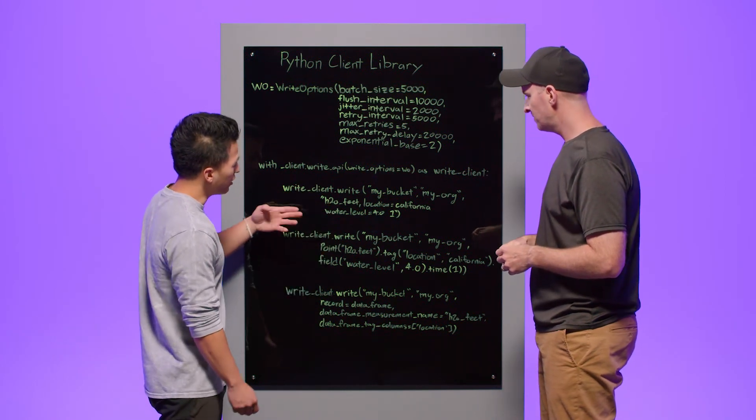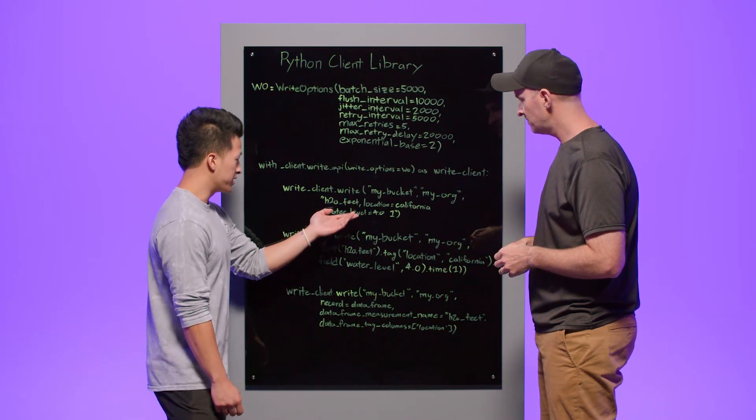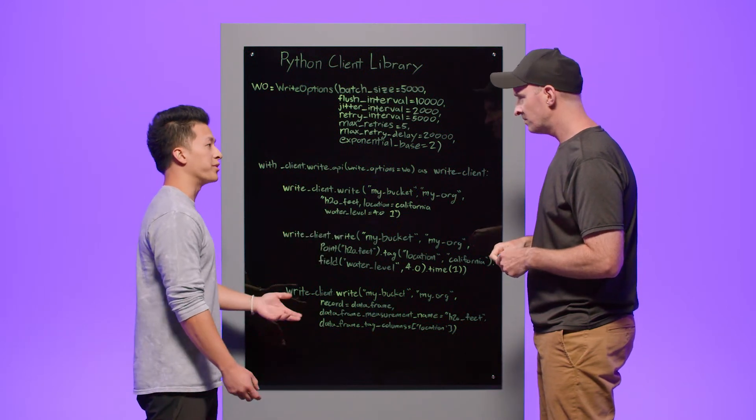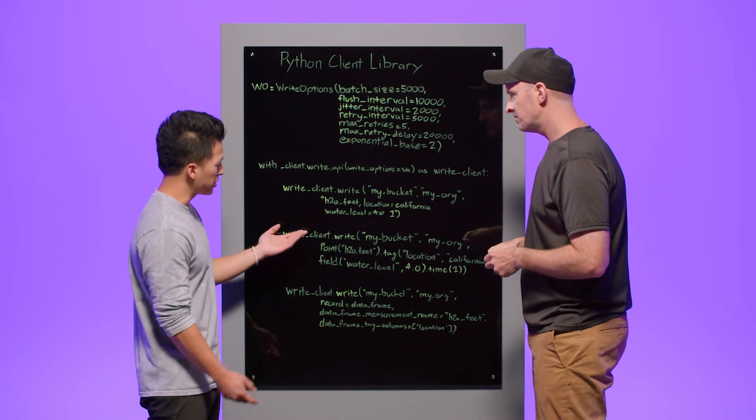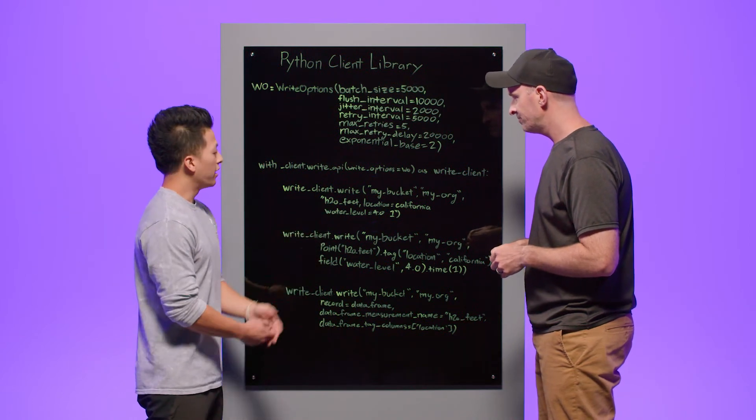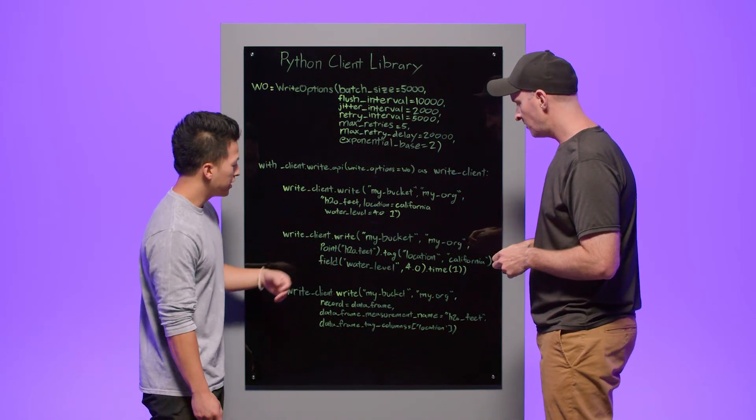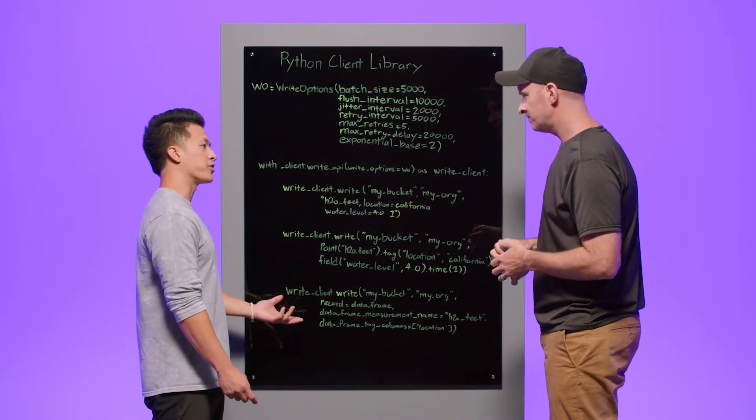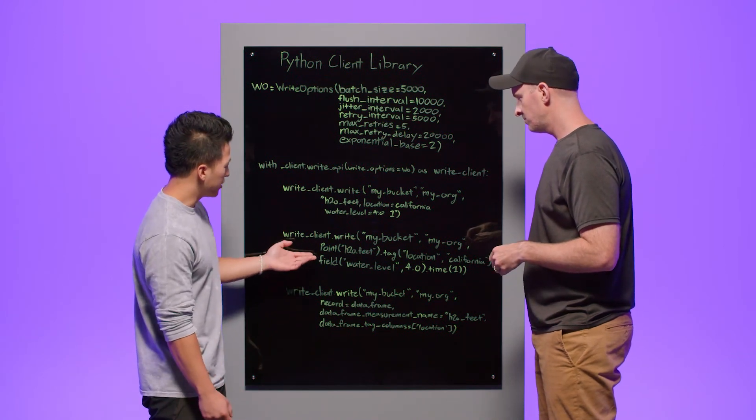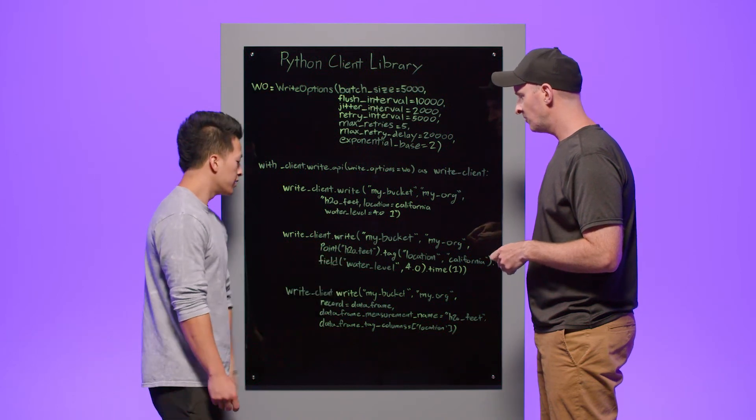This write function allows you to pass in a variety of different data formats. And so as you can see here, this is going to be InfluxDB's line protocol. If you've been using InfluxDB for a while now, you should be fairly familiar with this. And this allows you to write the data very easily. And so this next section here, we have our point data structure. And so if you're a more object-oriented programmer, or if your application is more object-oriented, this point data structure gives you that type of feeling, gives you that type of class if you want to use it.